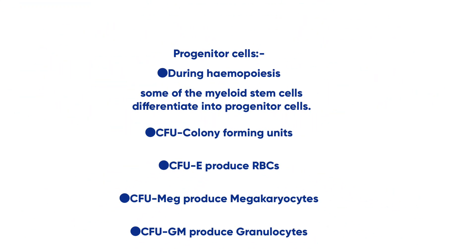Progenitor cells are derived from multipotential stem cells during hemopoiesis. Some myeloid stem cells differentiate into progenitor cells; other myeloid and lymphoid stem cells develop directly into precursor cells. Some progenitor cells are known as colony forming units, or CFUs. For example, CFU-E ultimately produces erythrocytes (RBCs), CFU-Meg produces megakaryocytes which are the source of platelets, and CFU-GM ultimately produces granulocytes.